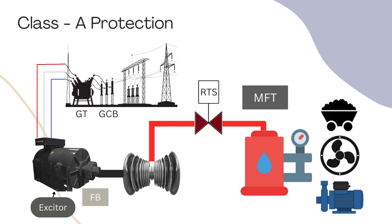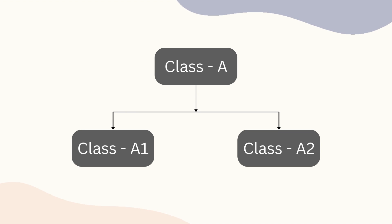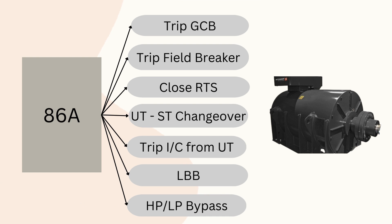Now we will understand how Class A protection works. This scheme protects the maximum portion of a power plant and is divided into two parts: Class A1 and A2. Both concepts are the same but divided into two groups. Consider a scenario where the generator bar's insulation is damaged — if the generator continues running, it will burn and result in a huge loss. In this critical situation, Class A protection will operate, sending trip commands to all specific locations.